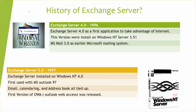Exchange Server had different versions before 4.0, but Exchange 4.0 was released on the 11th of June 1996, as you can see. It was the first application to take advantage of the internet. At that time the internet was there and everyone was using it, so Exchange Server was the first application to properly use the internet.